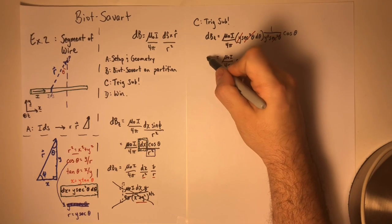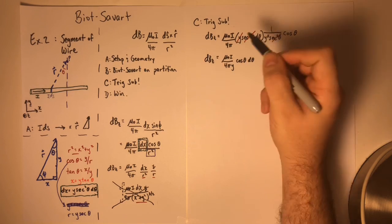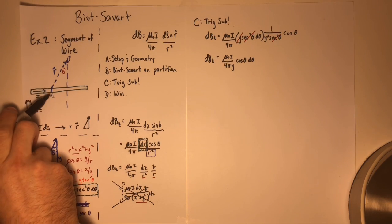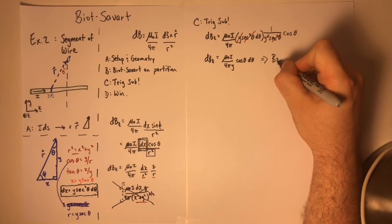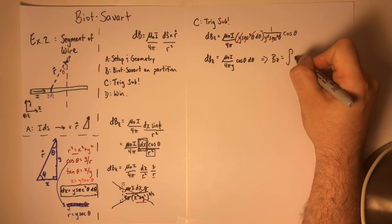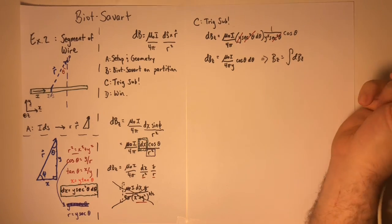Now we have the final expression of the partition, the one current element that we used as an example. The next step is to find the total field by integration.